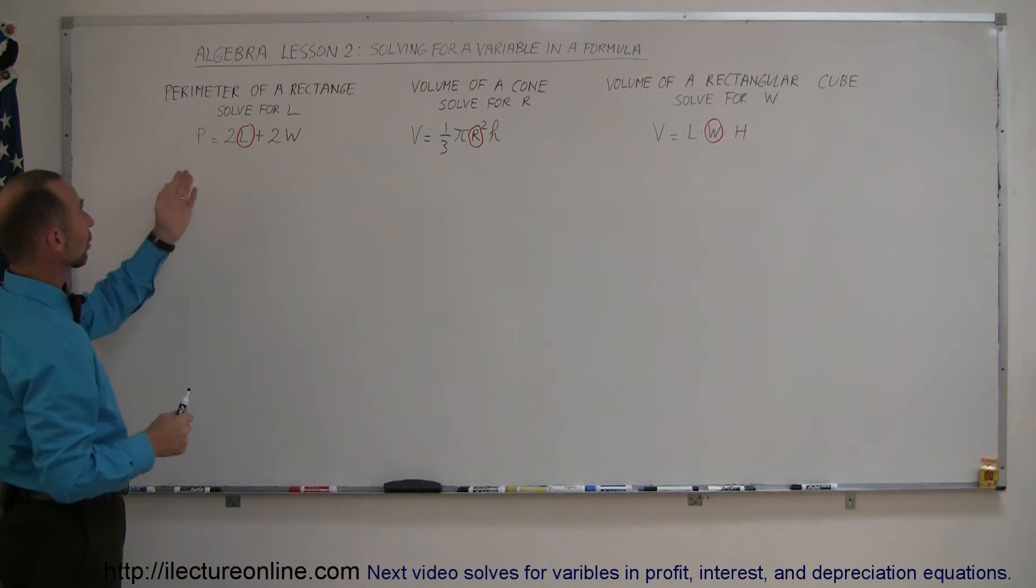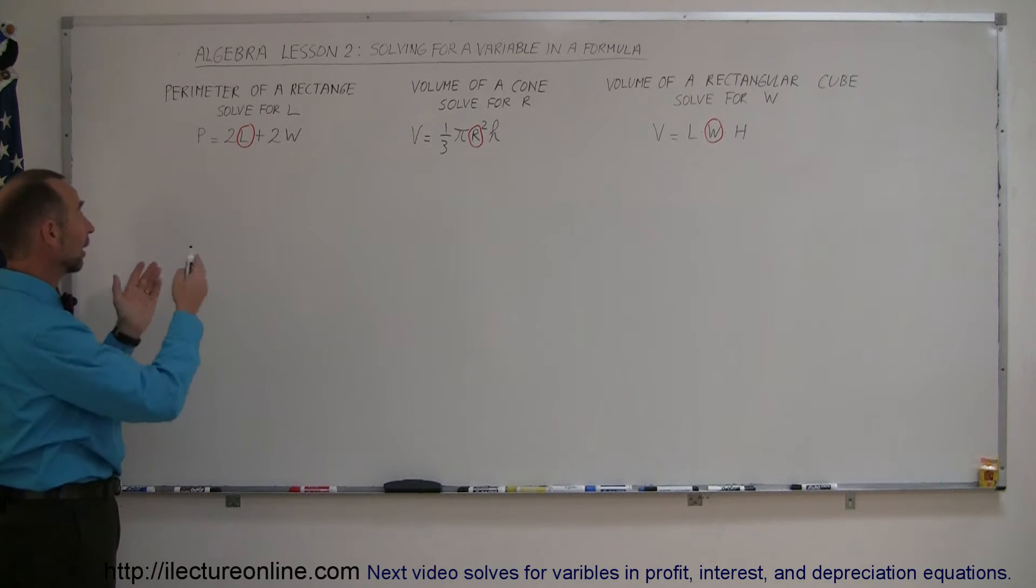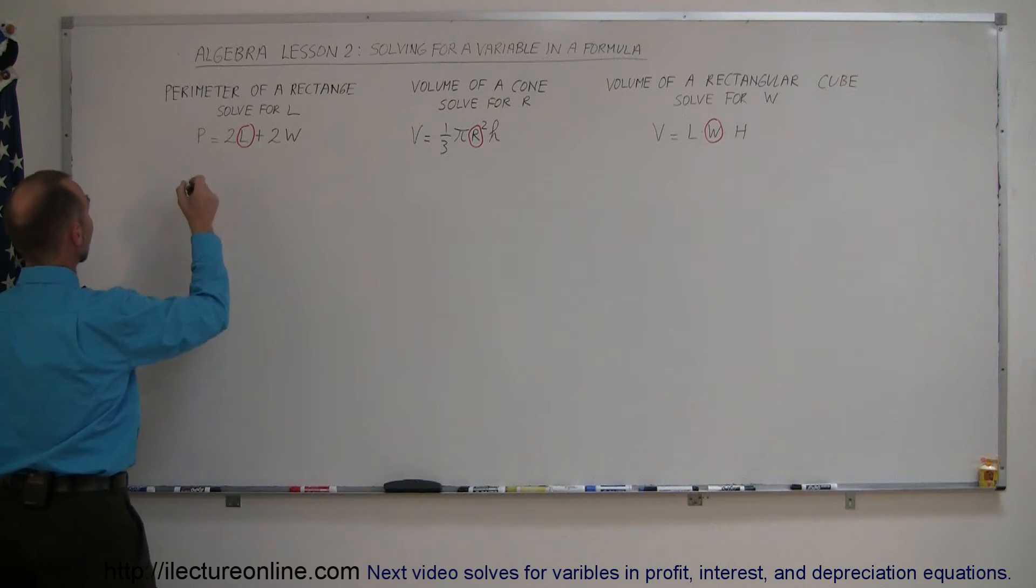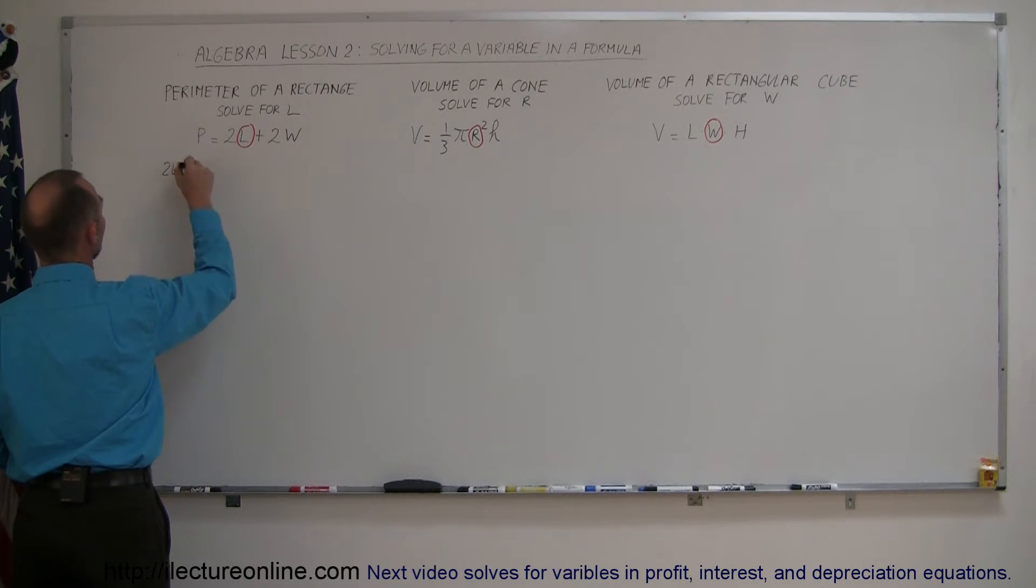Again, if the variable you're looking for is on the right side equation, I suggest you move it to the left side simply by switching the equation around so we can write 2L plus 2W equals P.